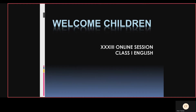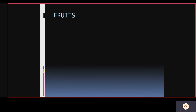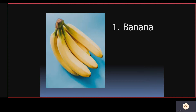Welcome children, I hope you all are sounding good. Welcome to our 33rd online session. Today in our English class we are going to learn from Unit 7 - Fruits and Vegetables - once again. We will revise children. I hope you have colored these pictures in your textbook on page number 107. First we will revise about fruits.